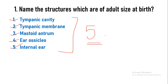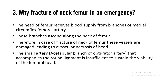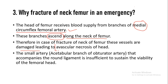These structures are not going to increase with the growth of an individual. The next question is: why is fracture of the neck of femur an emergency? The head of femur receives blood from the branches of the medial circumflex femoral artery, which is the major source of blood supply. These branches ascend from the lateral side along the neck of femur, so when there is a fracture of the neck, these vessels are damaged, leading to avascular necrosis. There is one more source of blood supply — the acetabular branch of the obturator artery, which is present in the round ligament of the femur.